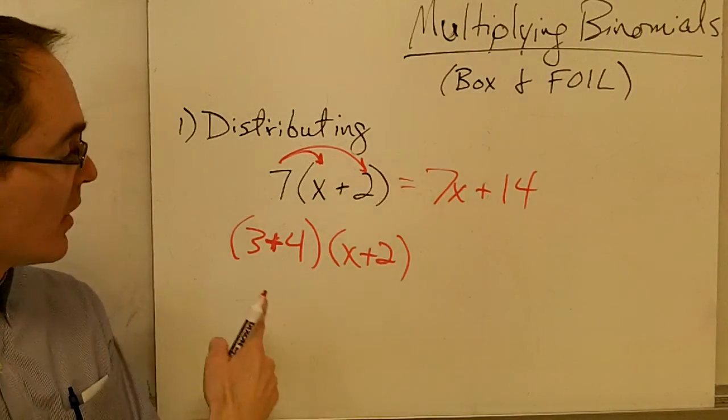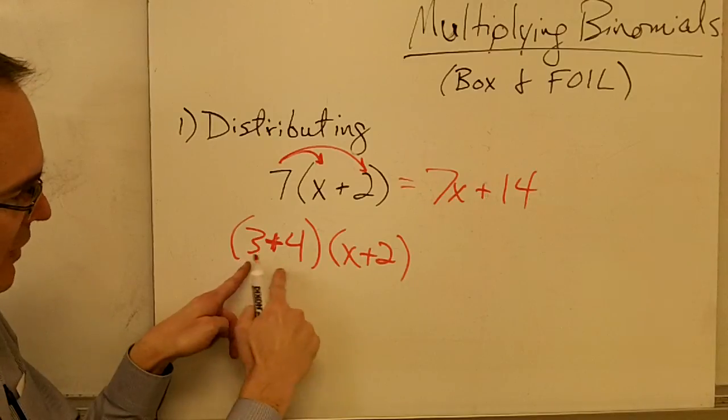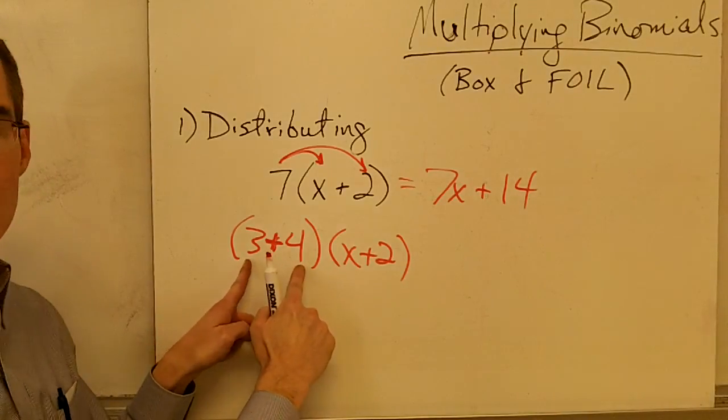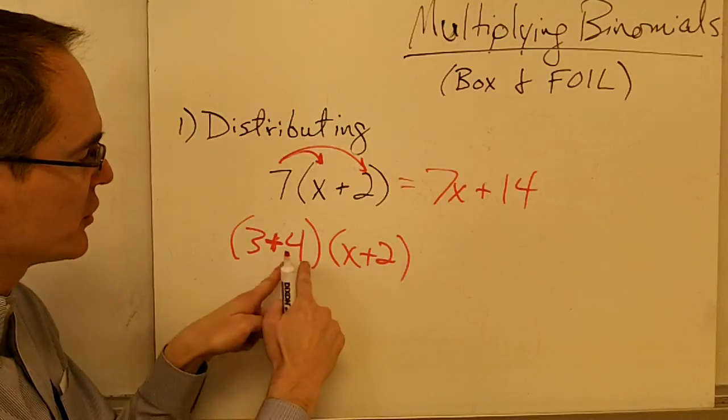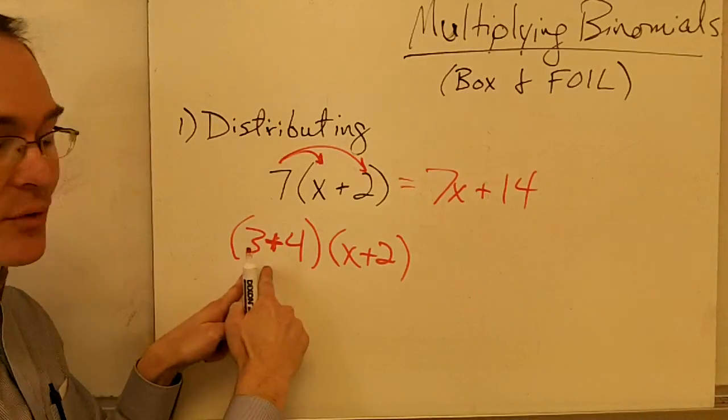It's the same thing. Well, now, though, I've got two terms here, 3 and 4, that I need to multiply by, which means I've got to multiply x plus 2 not only times 4, but also times 3.